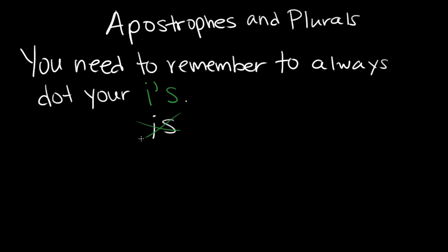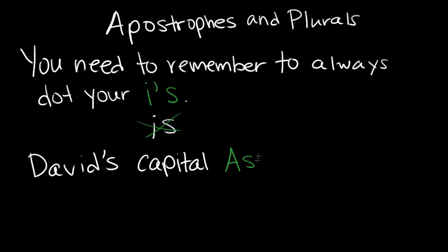So this is the only case. If it were uppercase letters, you wouldn't do this, right? So if you were saying, you know, David's capital A's look like trees, it's less likely that you're going to confuse capital A, lowercase s, in the middle of a sentence for the word "as," because you wouldn't just capitalize the word "as" in the middle of a sentence. So this is for only lowercase letters — the little ones, the inside voice.